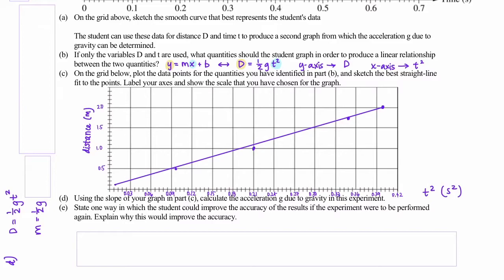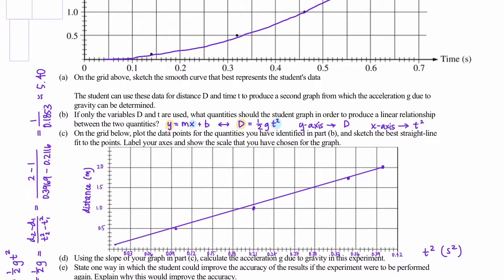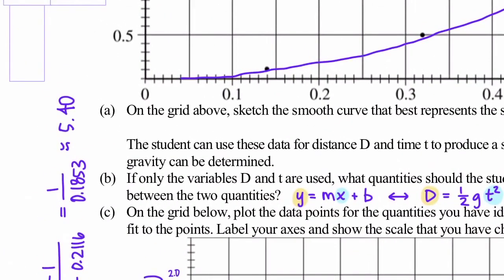So what we also want to do is calculate the slope based on the data we just plotted. And to calculate that slope, we're going to do rise over run. And the rise is going to be d2 minus d1, and the run is going to be t squared 2 minus t squared of 1. So plugging in our values, we get a slope of 5.4. And the units for the slope are going to have units of the rise over the run, so that would be meters per second squared.